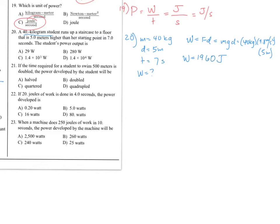1960 joules. Okay. Well that's not exactly the answer to this question. We gotta find out what power is. Yes, power is work over time. 1960 joules over 7 seconds. That is approximately 280 watts. So the unit for power is watts. Choice B.